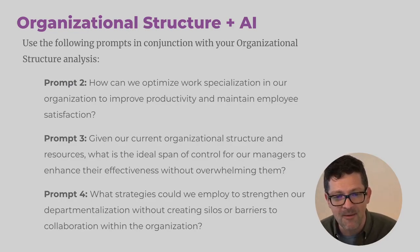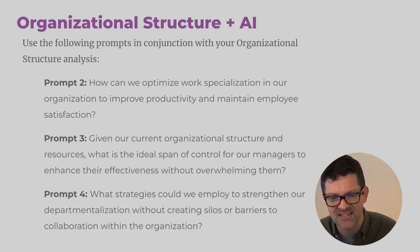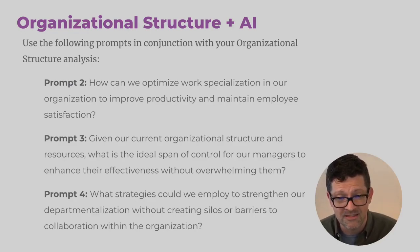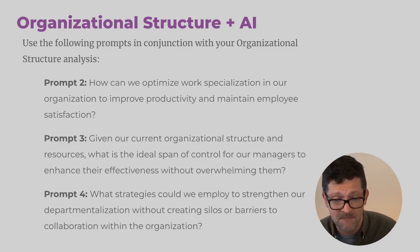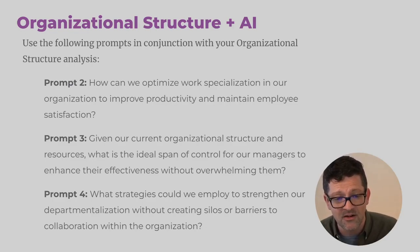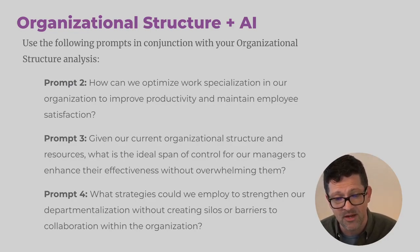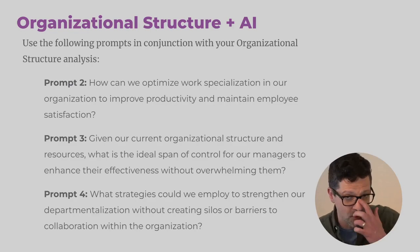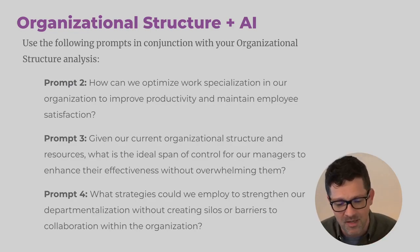Prompt two: How can we optimize work specialization in our organization to improve productivity and maintain employee satisfaction? Prompt three: Given our current organizational structure and resources, what is the ideal span of control for our managers to enhance their effectiveness without overwhelming them? Prompt four: What strategies could we employ to strengthen our departmentalization without creating silos or barriers to collaboration within the organization? These are general questions for general improvements on your initial analysis.